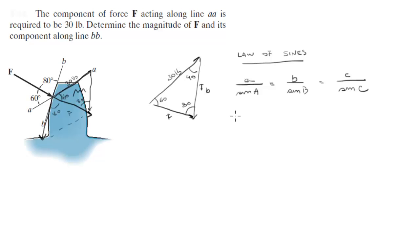So now you just plug in the numbers into the formula. You know that F over sine of 40 is equal to 30 over sine of 80, which is equal to FB over sine of 60.